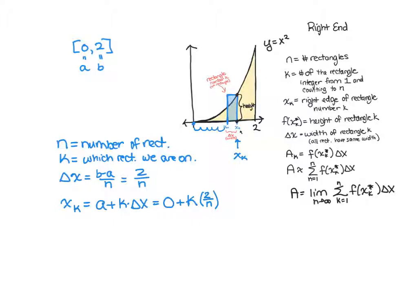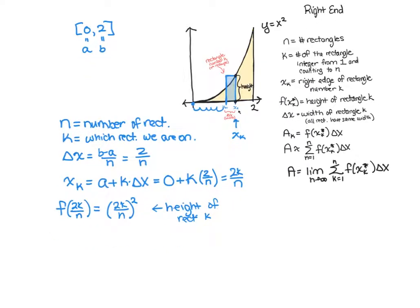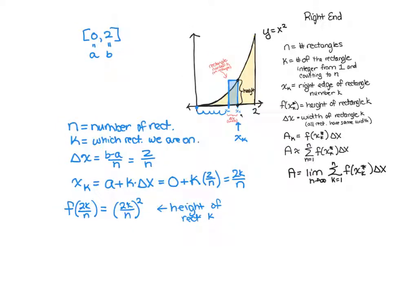And so then because we're going to do right endpoints to find the height, we can go ahead and plug that number directly into our function to find the height. So let's simplify this: this is 2k over n. f of 2k over n. And our function was x squared, so when you have f of something, you replace all the x's with that thing. So 2k over n quantity squared. And this is our height of rectangle k. So even though it has a width in it, that is not the width, just the height.